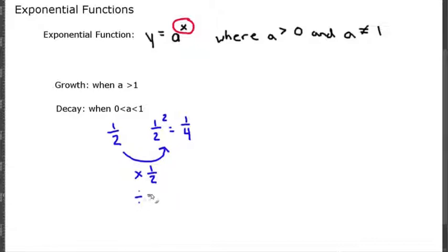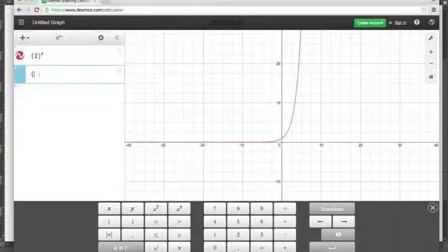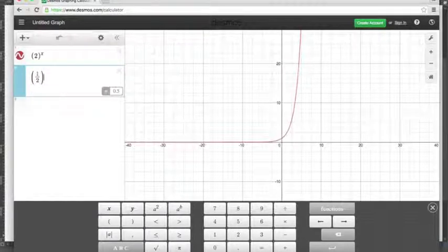Now let's look at one half cubed. One half cubed is one half times one half times one half, which is one eighth. And one eighth is smaller than one fourth.